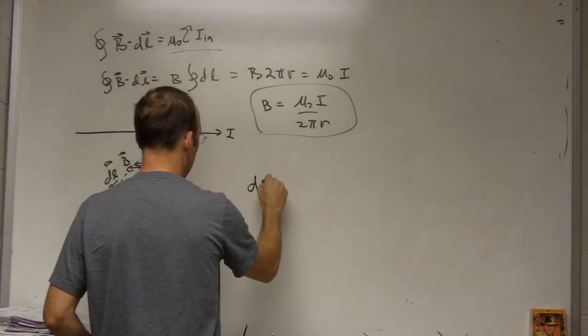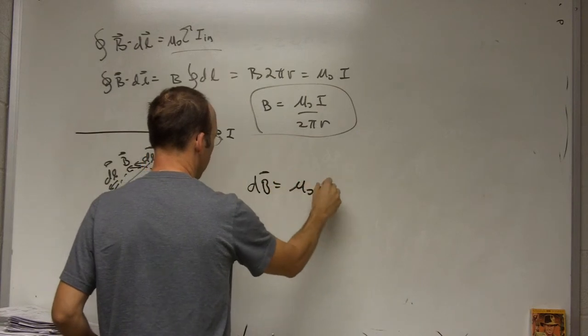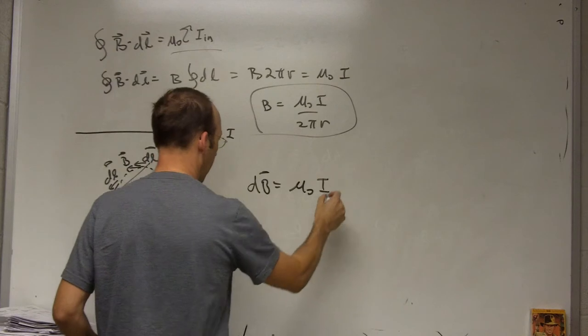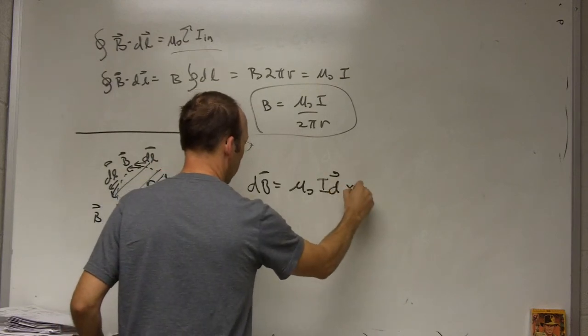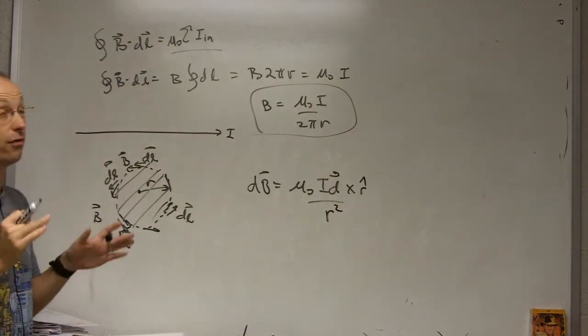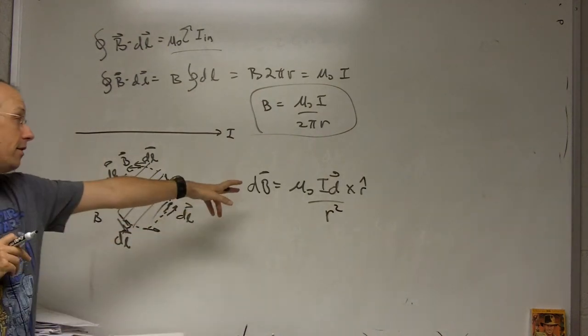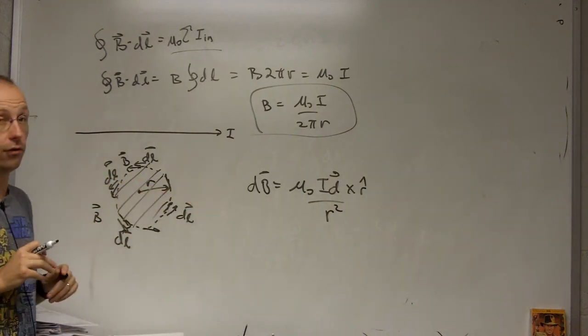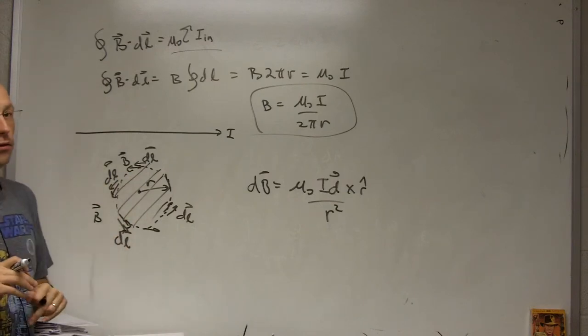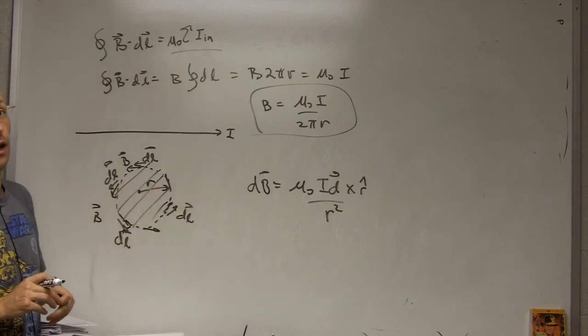we said DB equals mu naught, let's see, we did I delta L cross R hat over R squared. I mean, that's really the more fundamental thing. That does tell you the direction. That's how we got those directions. So we had no idea what these magnetic fields looked like in order to do this without first doing that.